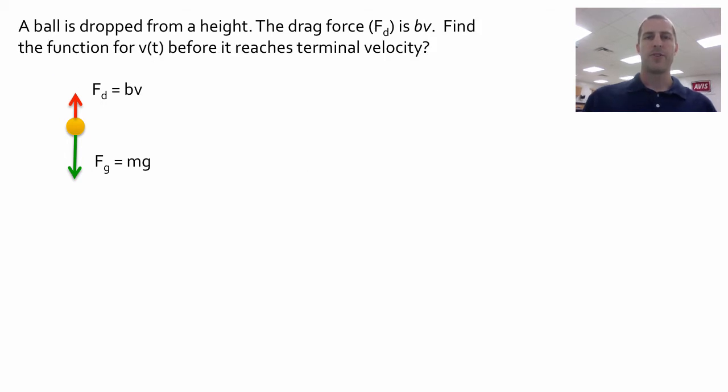But what if we don't want to find the terminal velocity? What if we want the velocity at any time along its path? Initially, the drag force is going to start off being less than the gravitational force, and it's going to grow as the velocity increases until they're equal and you hit the terminal velocity. So what if we want to find the velocity as a function of time as this ball is falling?